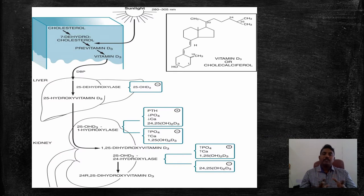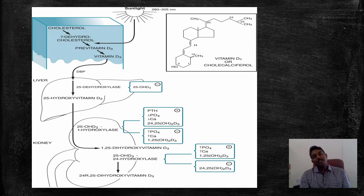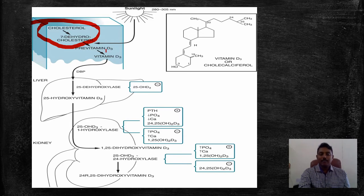To understand rickets, we need to first understand the physiology of vitamin D3 synthesis in our body. As you see in the picture, most of the vitamin D3 we get from sunlight — almost 80 to 90 percent comes from sunlight. The remaining 10 to 20 percent we get from the food we consume.